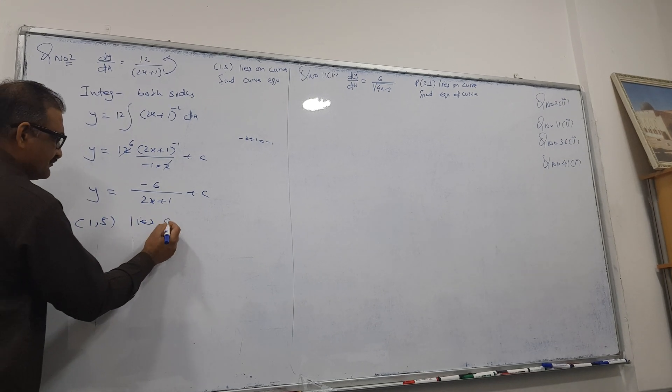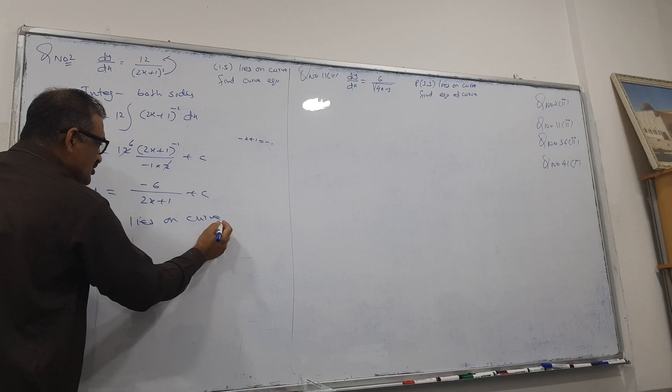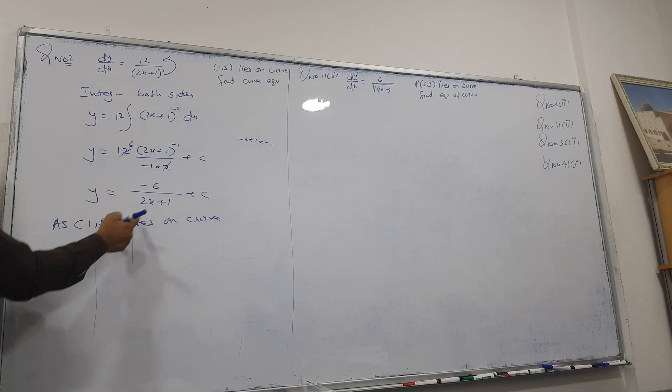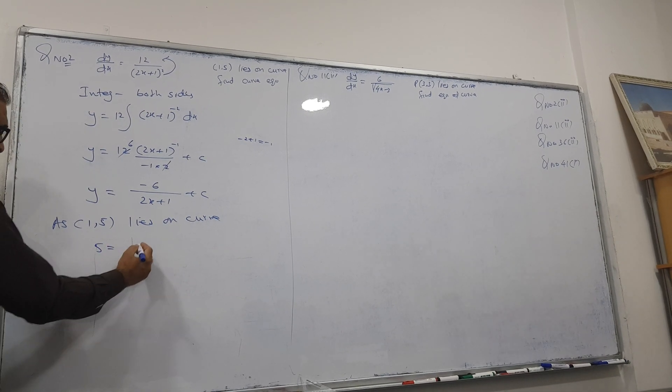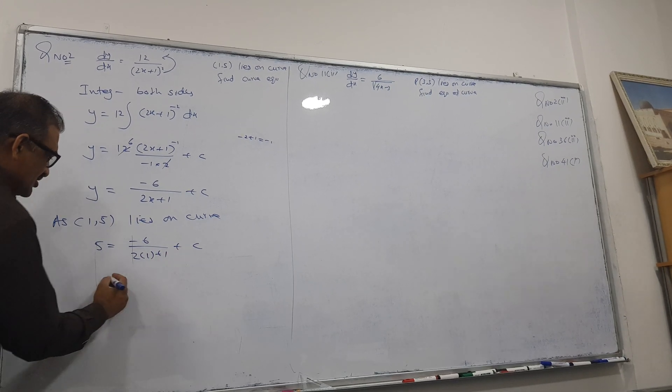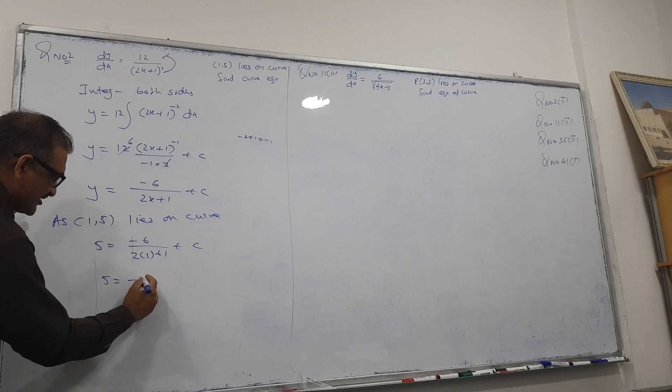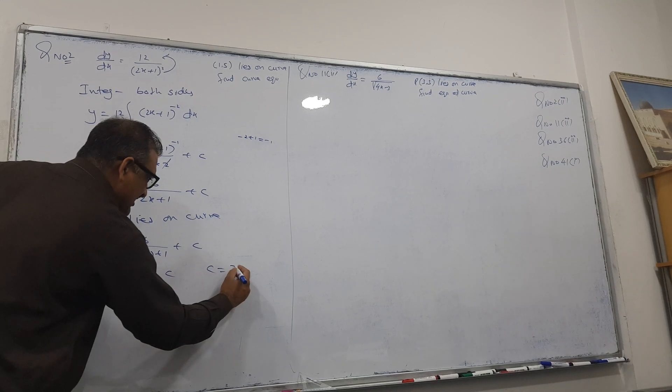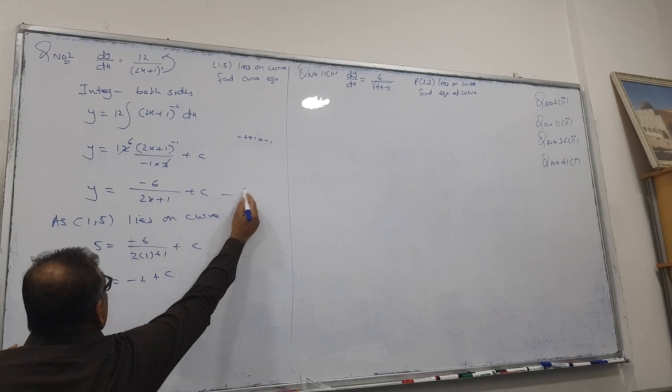Now see, as (1,5) lies on curve, so I can replace here. 5 will go in the place of y and minus 6x will go here. 2 times 1 plus 1 is 3. So I got here 3, I got a minus 2, so C becomes 7.